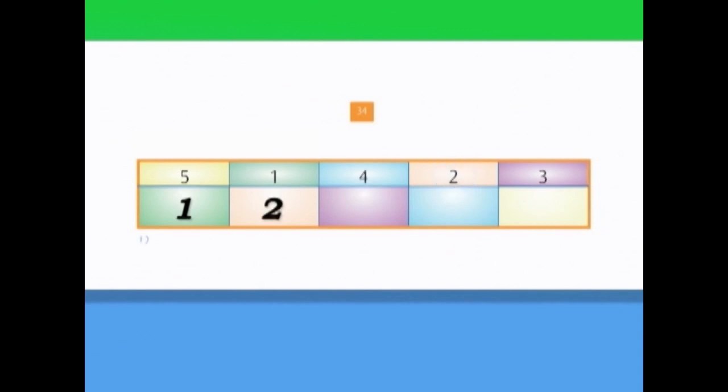So now we have one and two. What's the next number? Three. So where are we going to write the number three? There. And are the boxes the same color? Yes. So now we have one, two, three.